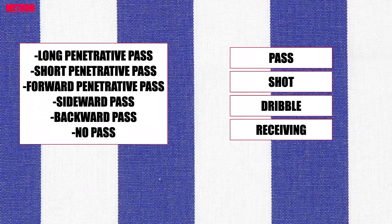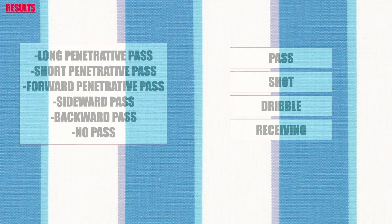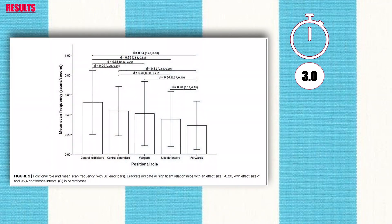Players performed on average 3.0 scans in the last 10 seconds before receiving the ball, giving a mean scan frequency of 0.44 scans per second. Scan frequency varied significantly with different positional roles, with central midfielders showing the highest mean frequency and forwards the lowest. Post-hoc pairwise comparison tests showed that scan frequencies for all positional roles were significantly different from each other, with effect sizes ranging from trivial to medium.